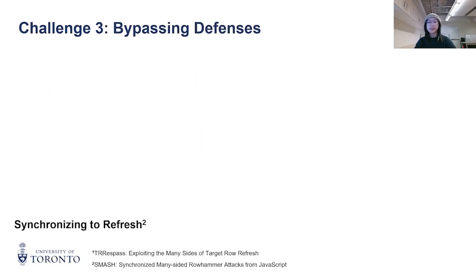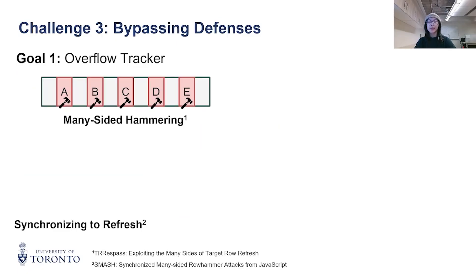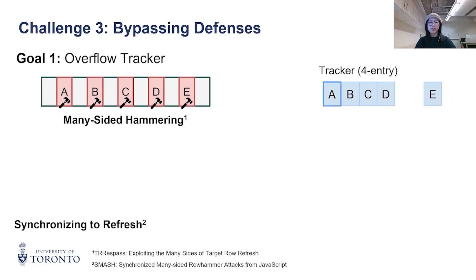To bypass TRR, prior work proposed two techniques. First, Trespass shows that the tracker can be overflowed by many-sided hammering — activating more than two distinct aggressor rows. Because the tracker only holds a fixed number of entries, hammering many different rows forces one row out of the tracker, so it escapes and is not refreshed.